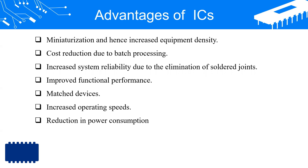Thousands of silicon wafers consisting of individually millions of components can be produced simultaneously — known as mass production. Due to this, the cost of IC is very low. As the number of components are fabricated on a single silicon wafer, the weight of IC reduces as compared to discrete circuits with the same number of components. ICs operate at low voltages, so the power consumption of IC is very low. In IC, soldered joints are absent, and thus high reliability of the system is a main feature of ICs.